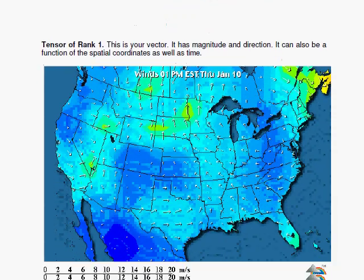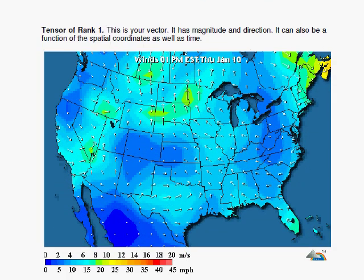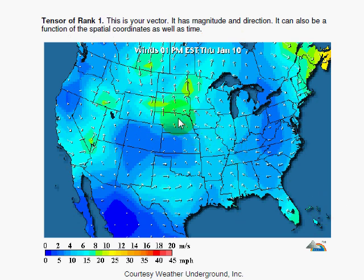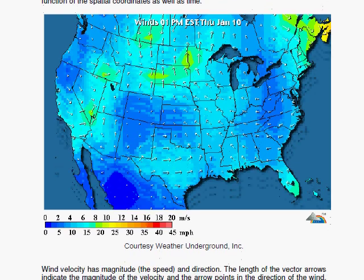and the tensor of rank 1 is our vector, and our vector has the magnitude and direction, and wind would be an example of that, where you have little arrows here with different lanes showing you the wind velocity, which gives you its magnitude, its speed, and in which direction the wind is blowing. That's a tensor of rank 1, our vectors,